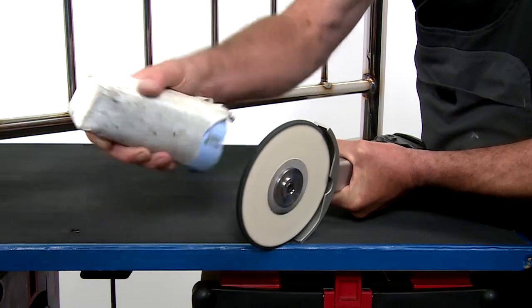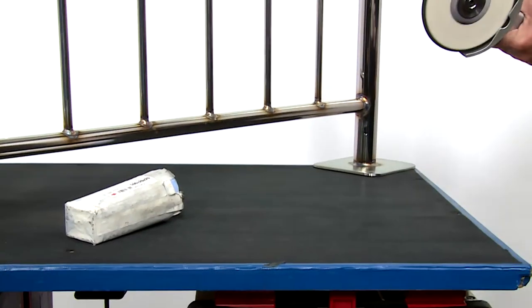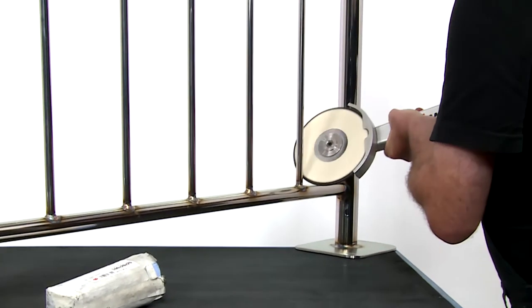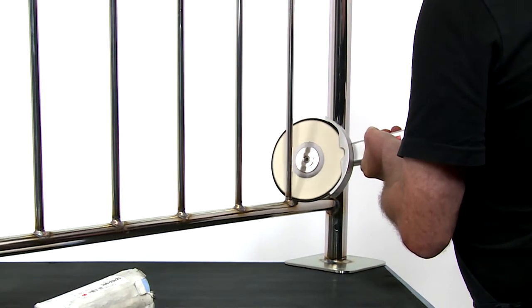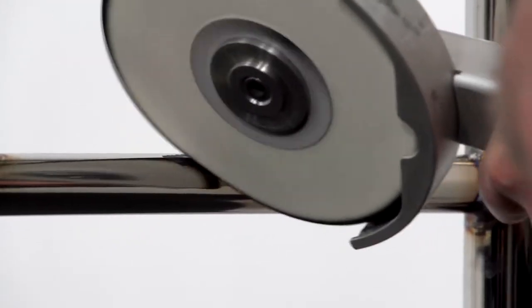With the machine running at low speed, apply the blue polishing paste to the felt polishing disc. Remove the heat tint colors at the weld with this.